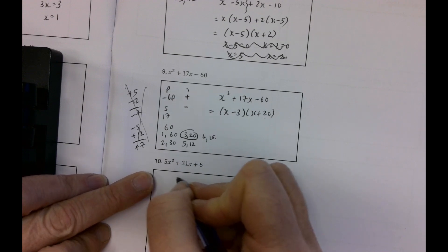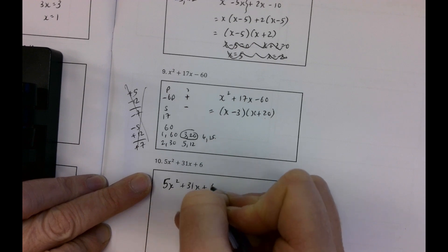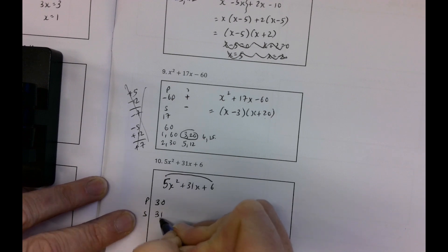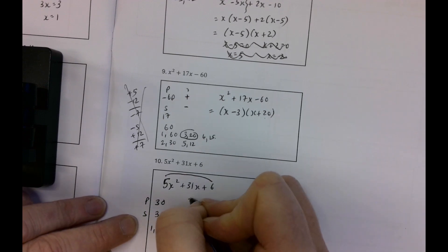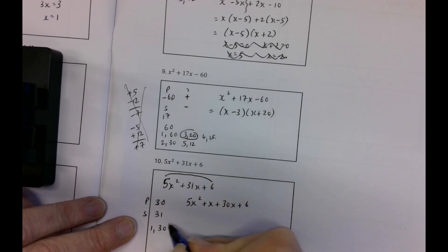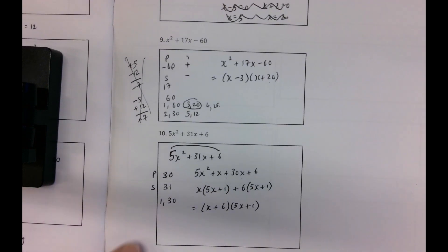5x squared plus 31x plus 6. So the product now this is I'm just going to show you how to do this because for the non-monics you need a method. So the product is 30 and the sum is 31 so it's going to be 1 and 30. So 5x squared plus x plus 30x plus 6. So I've split this middle term into x and 30x. x is in common x by 5x plus 1 plus 6 by 5x plus 1 is equal to x plus 6 by 5x plus 1.